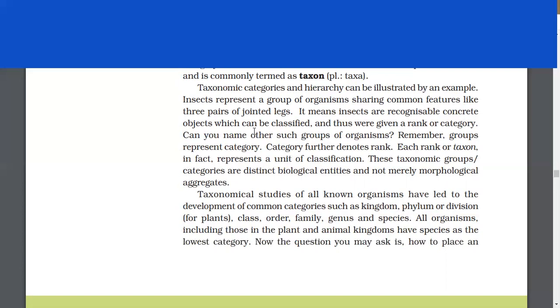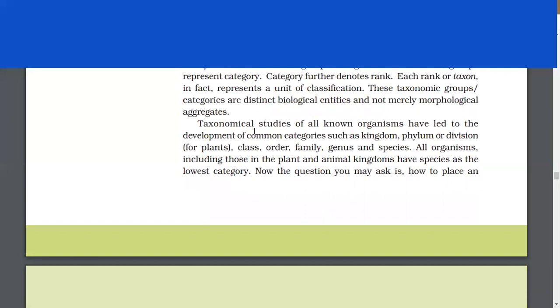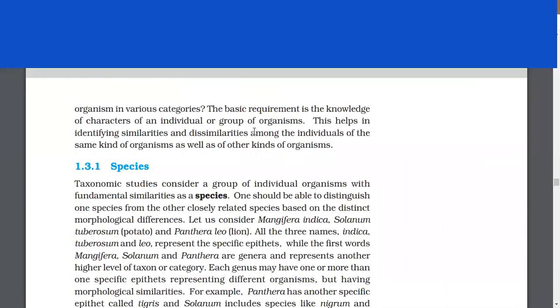Now, the question you may ask is, how to place an organism in various categories? The basic requirement is the knowledge of characters of an individual or group of organisms. This helps in identifying similarities and dissimilarities among individuals of the same kind as well as of other kinds of organisms. Species.